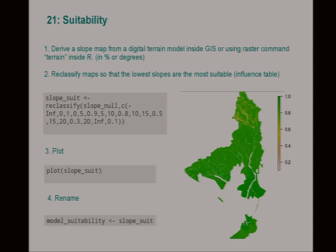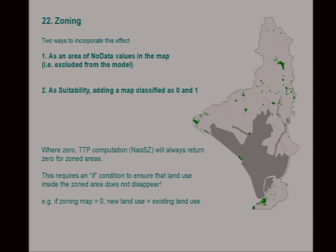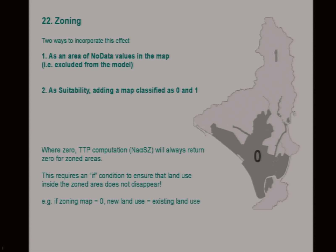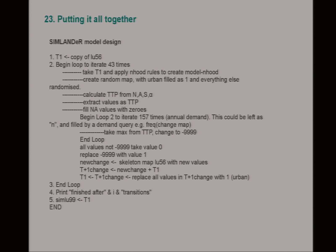The slope is our suitability — I've chosen a slope map, the simplest and most typical example for locating urban land. Generally urban land is found on slopes of less than about 5%. Most of this area is in fact less than about 5%. Blocked out in white is the protected area. For zoning, you've got two ways to incorporate it — I chose the simplest, which is to exclude the no-data areas from the model. You could also add it the same way you did suitability, as a map with values from 0 to 1, but if we return 0s we're putting 0s into a multiplying equation so the result will be 0 — and we don't want land use to disappear, so we'd need a conditional statement.